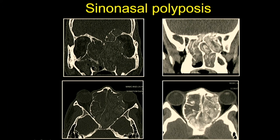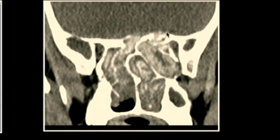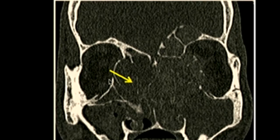Sinonasal polyposis is the Type 4 pattern, which we see very commonly — polyps leading to expansion of the nasal cavity and expansion of the infundibula, with some hyperdensity within, which could also represent allergic fungal sinusitis. Despite extending superiorly, eroding bones, and remodeling surrounding structures, the polypoidal shape is still maintained. Truncation of the bulbous portion of the middle turbinate is a clue to the presence of polyposis in chronic rhinosinusitis.